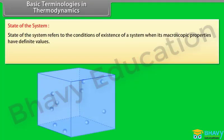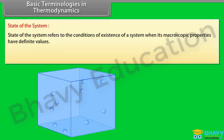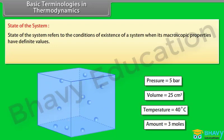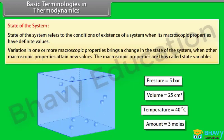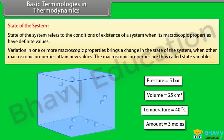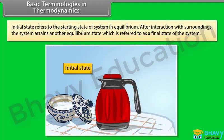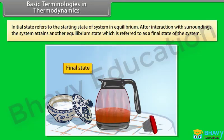State of the system refers to the conditions of existence of a system when its macroscopic properties have definite values. For example, the state of a gaseous system can be defined by its pressure, volume, temperature, and amount. Once these minimum numbers of macroscopic properties are fixed, the other properties automatically acquire definite values. Variation in one or more macroscopic properties brings a change in the state of the system when other macroscopic properties attain new values. The macroscopic properties are thus called state variables. Initial state refers to the starting state of the system in equilibrium. After interaction with surroundings, the system attains another equilibrium state, which is referred to as the final state of the system.